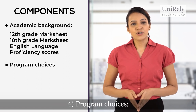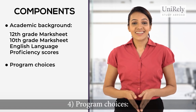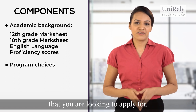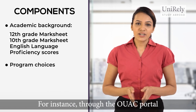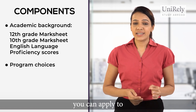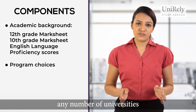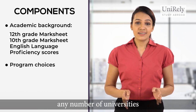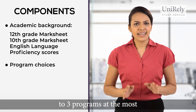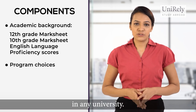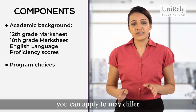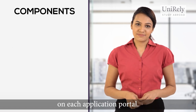Number four, program choices. In this section, you can select the subjects that you are looking to apply for. For instance, through the OUAC portal, you can apply to any number of universities. However, you are limited to three programs at the most in any university. The number of programs you can apply to may differ on each application portal.